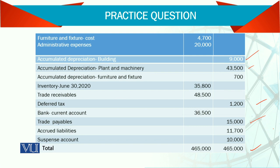I am sure in your earlier courses you have studied how to come up with the trial balance. In fact, if you look into the accounting cycle, we need to start from the journal entries, then the ledger, and by balancing the ledger we prepare the trial balance. So in limited companies also, this trial balance is now ready.